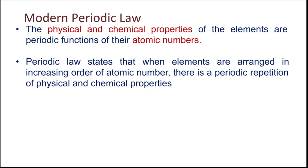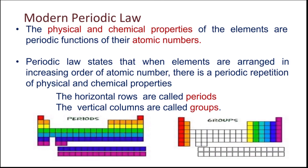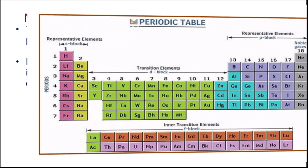While arranging the elements in increasing order of atomic number, a periodic repetition means that after a regular interval, the elements which are repeated have similar physical and chemical properties. The horizontal rows are called periods, and the vertical columns are called groups. In the modern periodic table, we have seven periods and eighteen groups. The details about the modern periodic table we will be discussing in the next class.